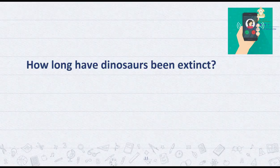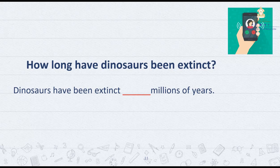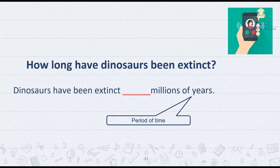How long have dinosaurs been extinct? Dinosaurs have been extinct for millions of years. Millions of years is a period of time, so we use 'for'. Dinosaurs have been extinct for millions of years.